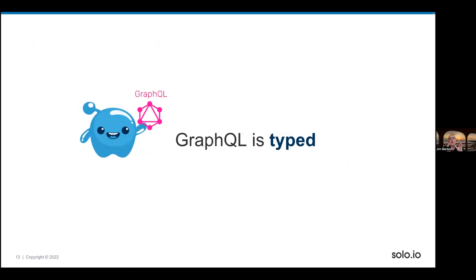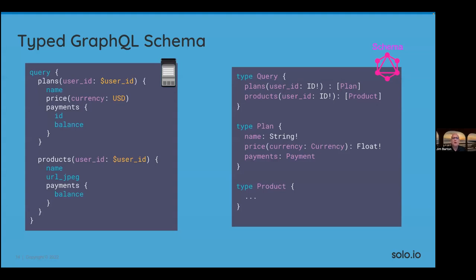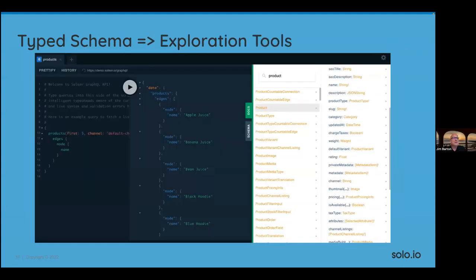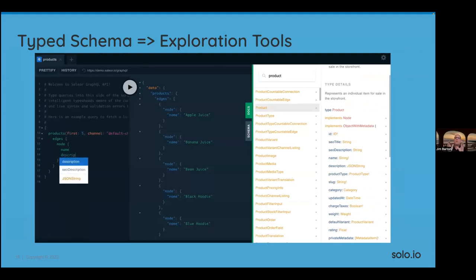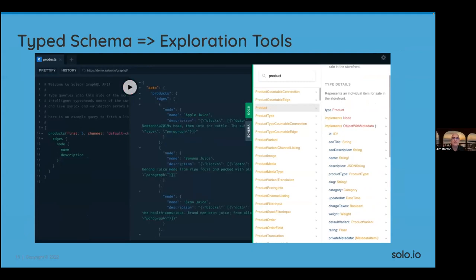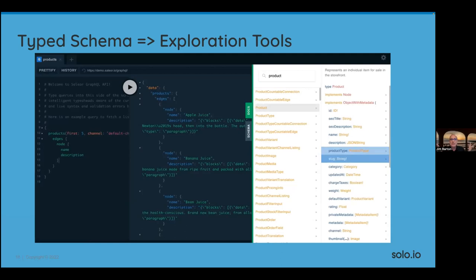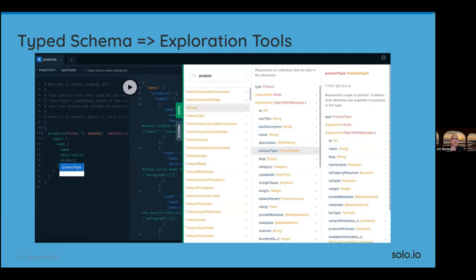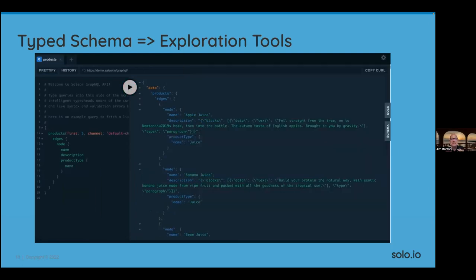GraphQL offers first-class support for a type schema. You can almost think of the GraphQL schema in the same way you think about an OpenAPI or Swagger specification, only for our GraphQL endpoint. You can see this clearly by following along with a GraphQL query on the left and the corresponding schema definition on the right — each part of the query precisely matches the schema. This type schema opens up a whole new world of helpful tools for Wayne Telecom developers. You can leverage tools like GraphQL Playground, where front-end developers can explore the schema, build up their queries interactively, and then easily incorporate those queries into their application code.